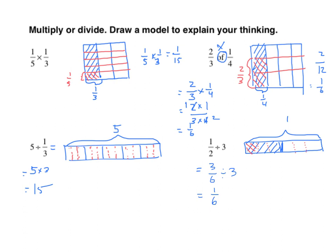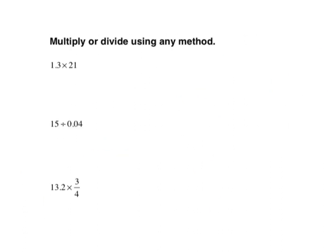There's an awful lot to remember in this module. Here it just tells us to multiply or divide using any method. I have multiplying a decimal times a whole number. I'm going to put my 21 up here and my one-and-three-tenths. Remember, we just multiply and don't deal with the decimal until the very end. Three times one is three, three times two is six. We put our zero in and multiply, then find the sum. I have to look at the number of decimal places in my two factors — this one has zero, this one has one — so I move the decimal one place. My answer is twenty-seven and three-tenths.